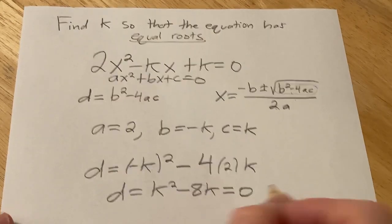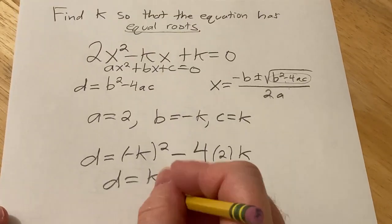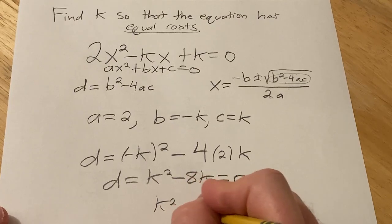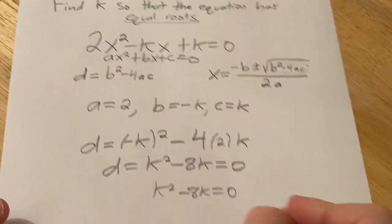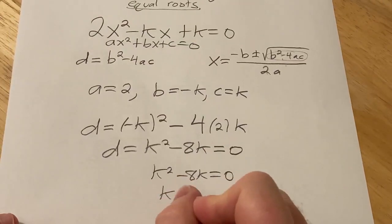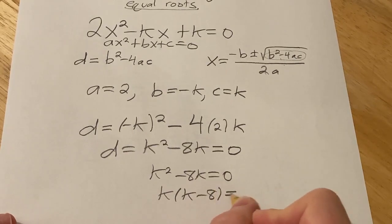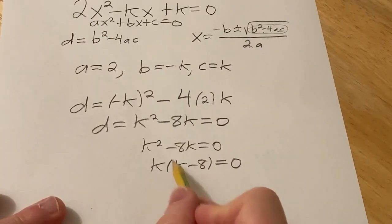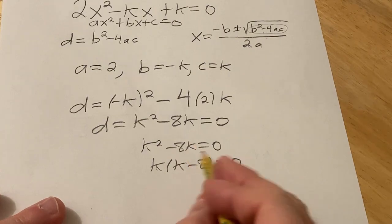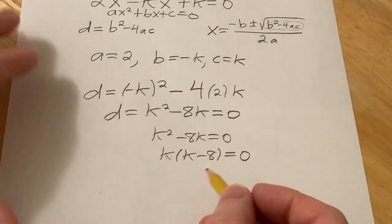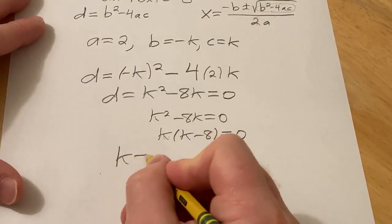Okay, so we just have to solve this for k. So k² - 8k = 0. Now we can pull out a k. Because k times k is k², k times -8 is -8k. And we have a product equal to 0. Whenever that happens, you just set each factor equal to 0.